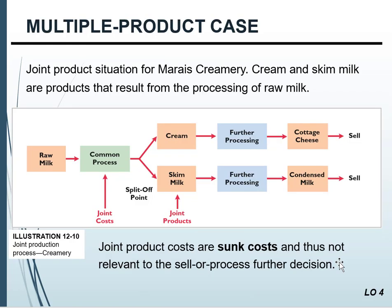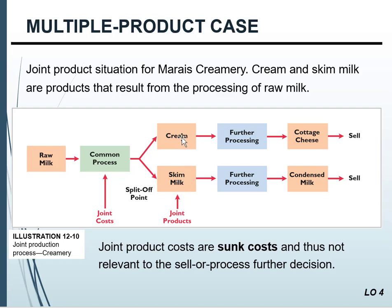Now let's look at the multiple product case. We buy raw milk, run it through a common process to get it ready for production, and then we can decide what to do. Do we make cream and further process it into cottage cheese? Or do we make skim milk and take that skim milk to create condensed milk? We might even proportionalize — say 50% of incoming milk goes to cream and 50% to skim milk, and then 50% of the cream goes to cottage cheese and 50% of the skim milk goes to condensed milk, giving us four possible products.